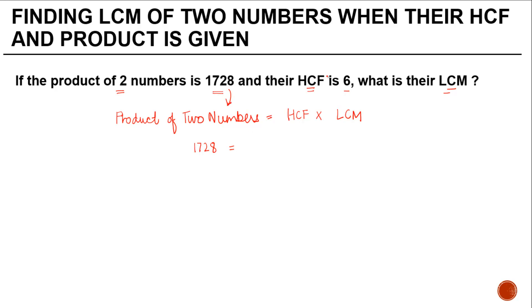So 1728 equals HCF (which is 6) × LCM. You need to find the value of the least common multiple. In other words, LCM = 1728 ÷ 6, which equals 288.